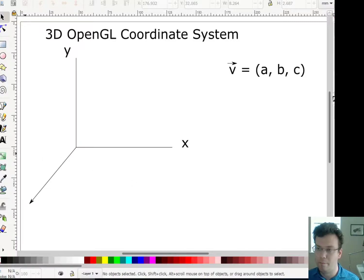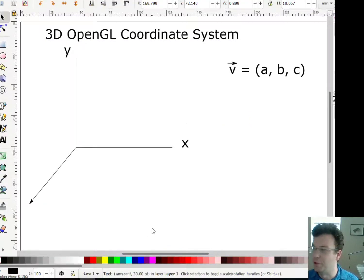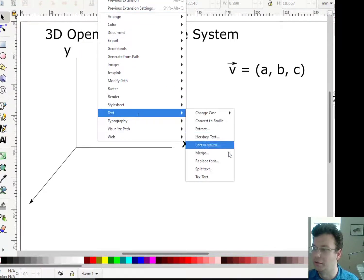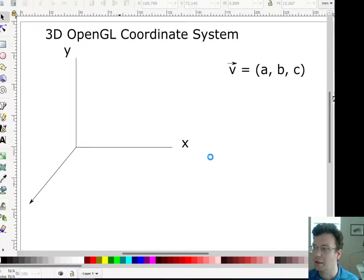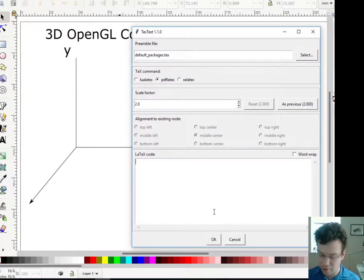All right, and then the magnitude of this vector is going to be, it's going to be the square root. Actually, I now have LaTeX enabled, let me show you that real quick. So I can go here, extensions, text. I just don't feel like trying to draw the square root again. So anyway,